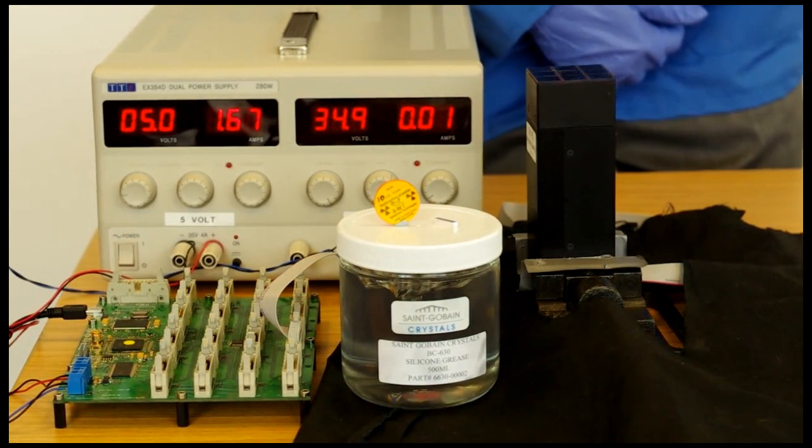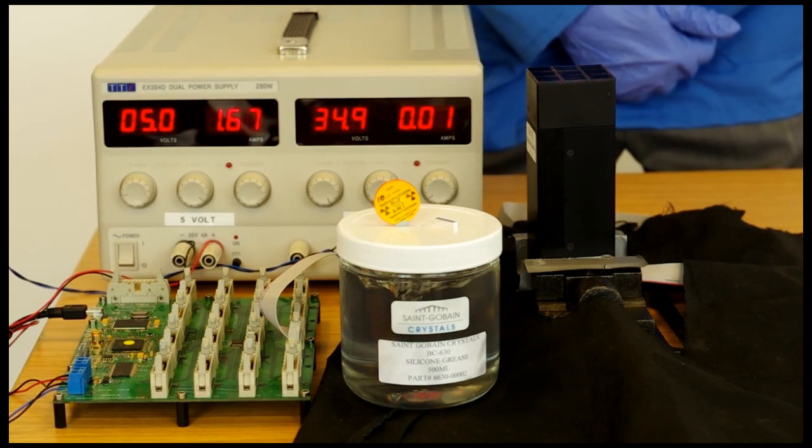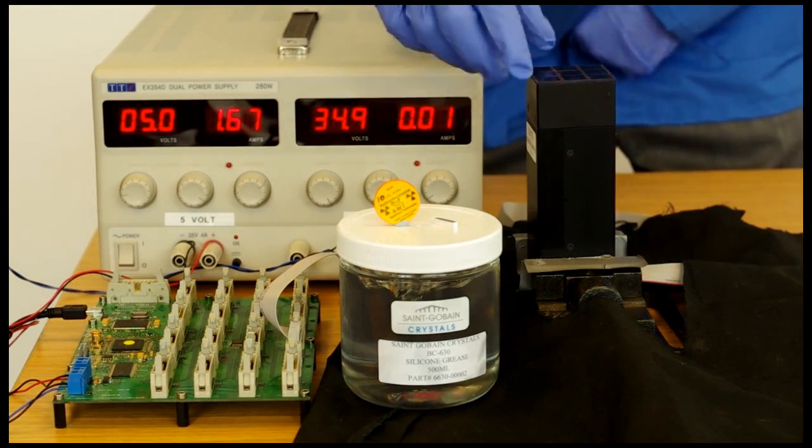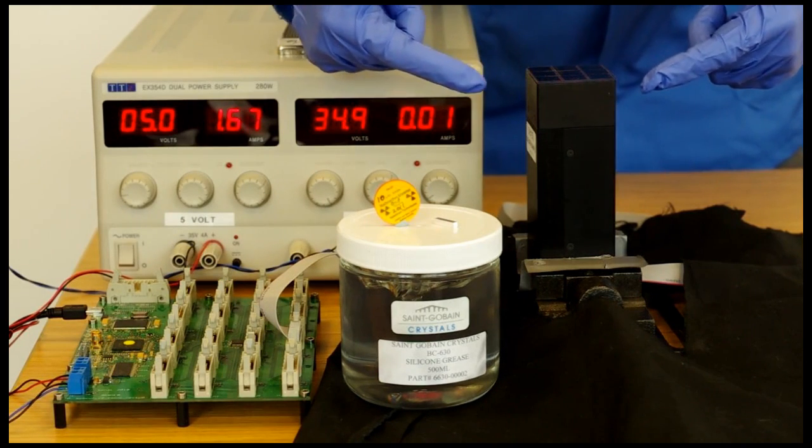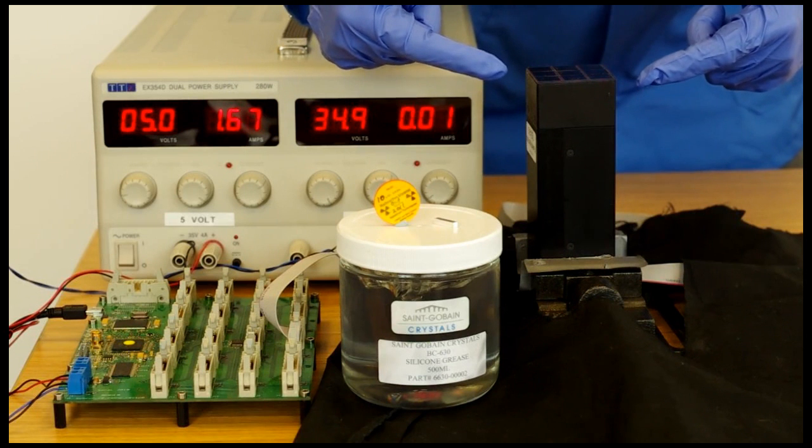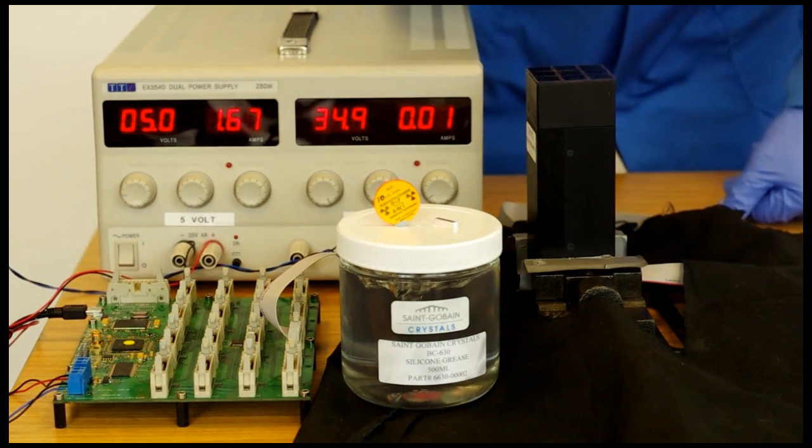In this video we're going to show how to couple a LYSO crystal to the Matrix SL9 readout head. For this experiment we've got a previously set up readout head and coincidence board and we've taken the readout head and placed it in a laboratory vice so that it's mounted vertically so that we can very easily place the crystal on top.